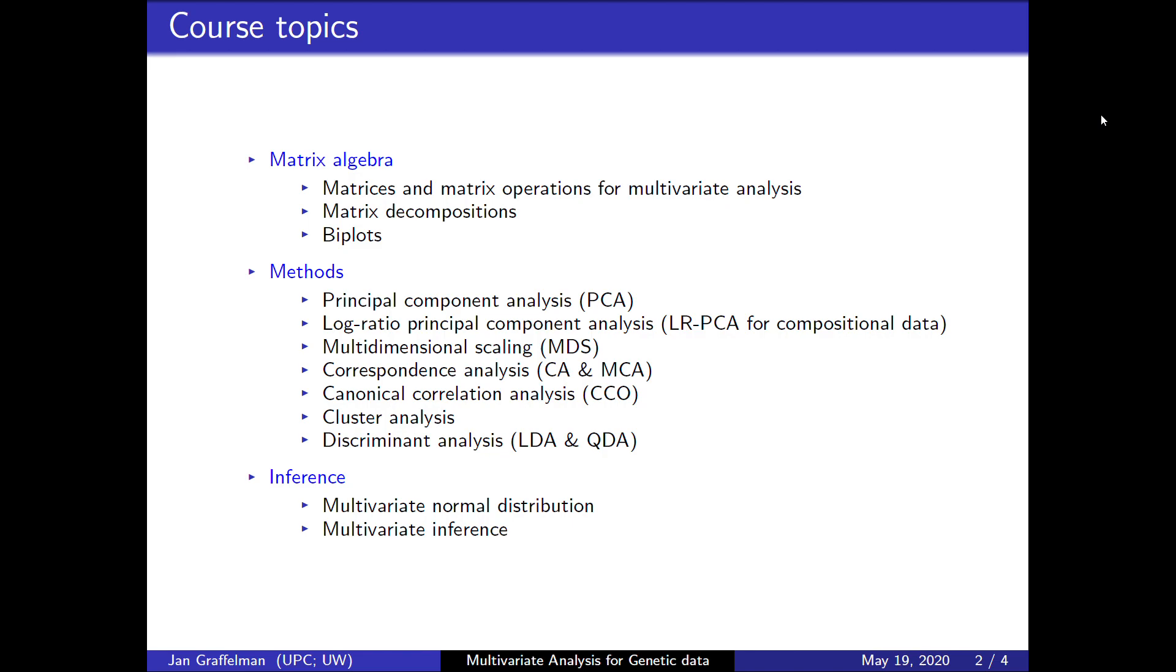The analysis of two data tables by canonical correlation analysis. We will also address the detection of groups in multivariate data by cluster analysis, and finally also do discriminant analysis for group discrimination and classification purposes. Finally, we will pay some attention to multivariate hypothesis testing and discuss the multivariate normal distribution.